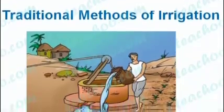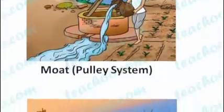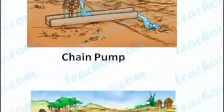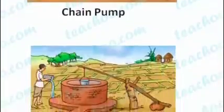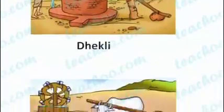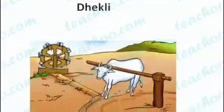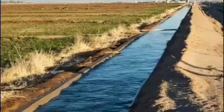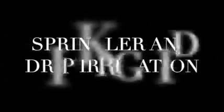Traditional methods of irrigation include: Moth, also called the pulley system; chain pump; Dhekli; and Rahat, also called the lever system; and canal irrigation. Modern methods of irrigation include sprinkler irrigation and drip irrigation.